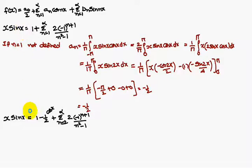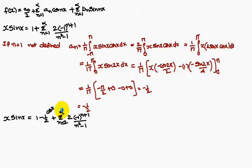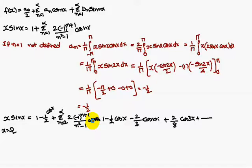Therefore, x sin x can be written as: 1 minus (1/2) cos x plus sigma (n=2 to infinity) of [2(−1)^(n+1) / (n²−1)] cos(nx). Expanding: 1 minus (1/2) cos x minus (2/3) cos(2x) plus (2/8) cos(3x) plus so on.